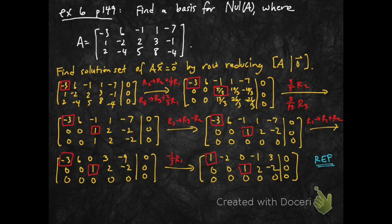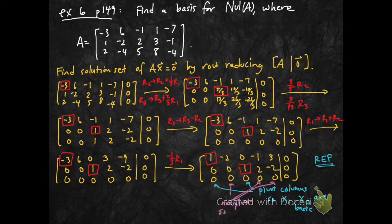And now, this is in reduced echelon form, and so I'm set up to write down the parametric vector form of the solution. I have pivot columns in columns 1 and 3, which tells me x1 and x3 are basic variables. I have non-pivot columns in columns 2, 4, and 5, so it tells me x2, x4, and x5 are free.